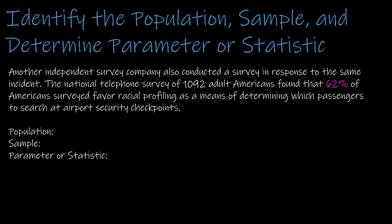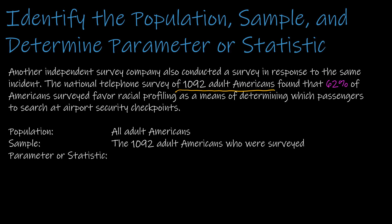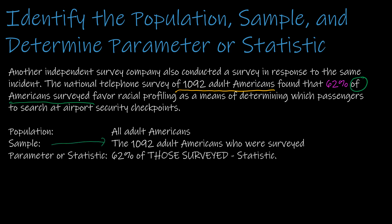We're looking at racial profiling as a means of determining which passengers to search at airport security checkpoints. The population here is adult Americans — a national telephone survey of adult Americans. The 1,092 surveyed is the actual sample, but we're looking at all adult Americans. The parameter or statistic: 62% of Americans surveyed — because we're talking specifically about those who were surveyed, that's going to be a statistic.